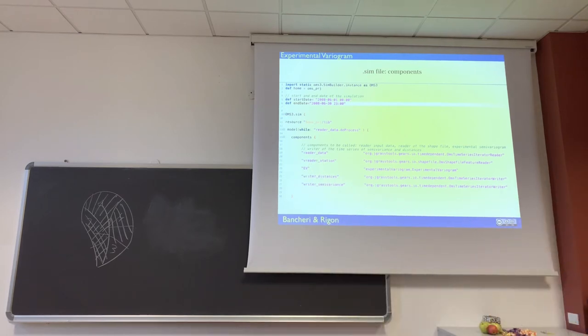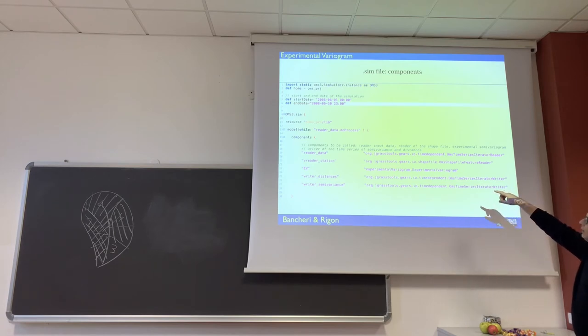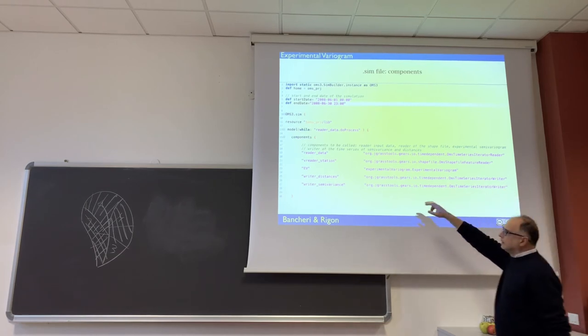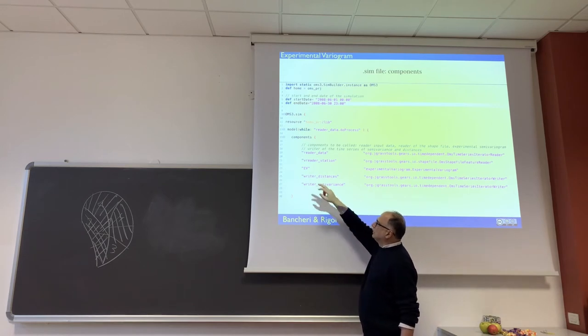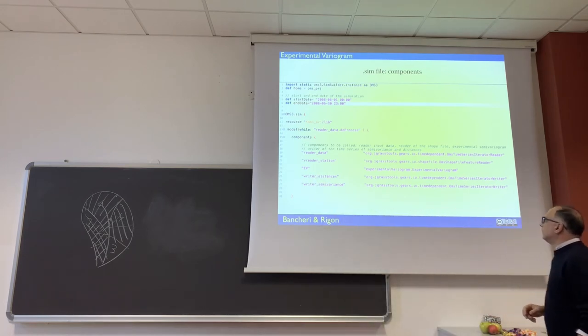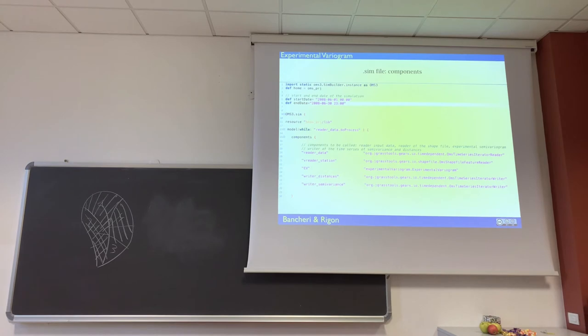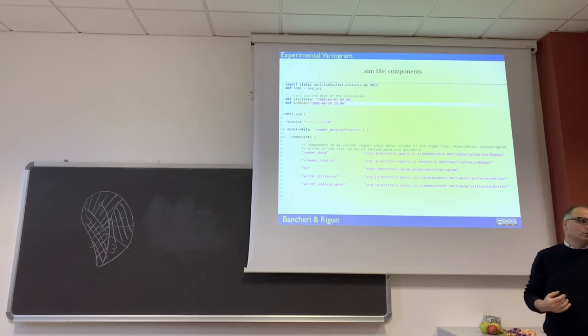This is the first connector, which is a time series iterator reader. And then here you have also other components, the shape file reader of the station. This is the experimental semi-variogram estimator. You have two iterations because obviously what you read you have also to write.